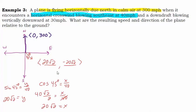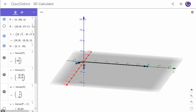So far so good. Now the third thing we've got going on is a downdraft blowing vertically downward at 30 miles per hour. This is where the 3D comes into play. I'm going to go over to GeoGebra and we're going to look at this in three dimensions.